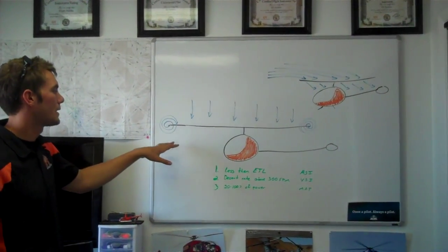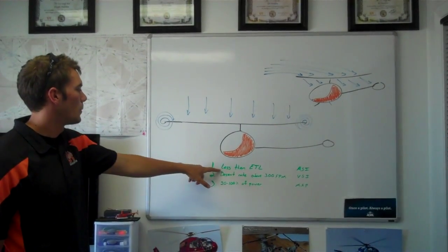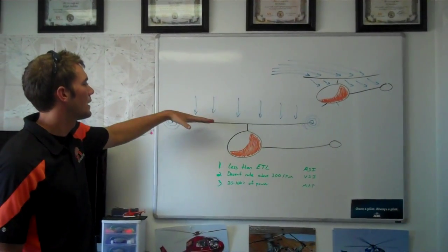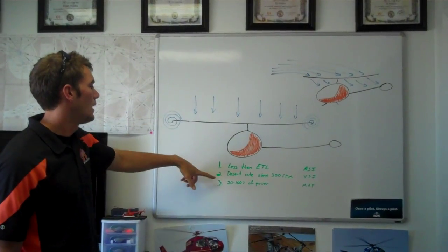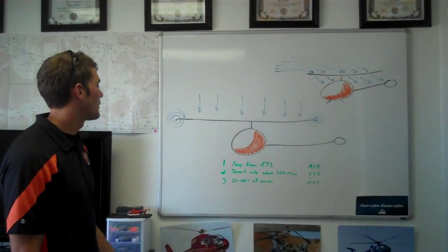What happens here with Settling with Power is the helicopter starts to slow down. We start less than ETL, so now we just have that air that's just above us. Now we're starting to descend 300 feet or more.